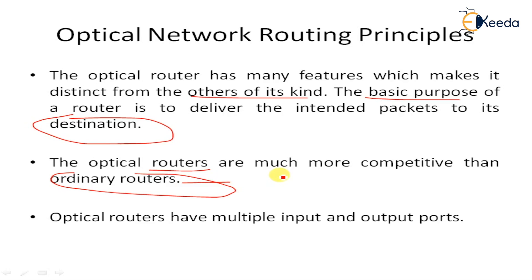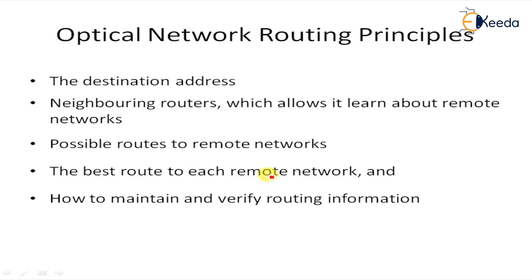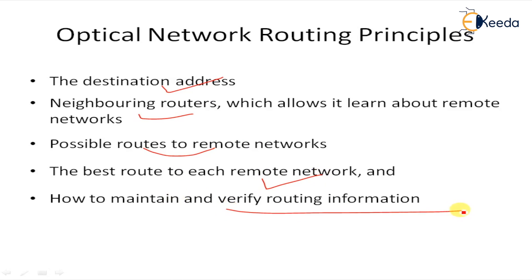The packet carries a source address and a destination address. The routing functionality uses information regarding destination addresses and neighboring routers, which allows it to route toward remote networks. It is possible to route to the remote network and find the particular data transmission path. The best route to each remote network is provided by various routing algorithms.